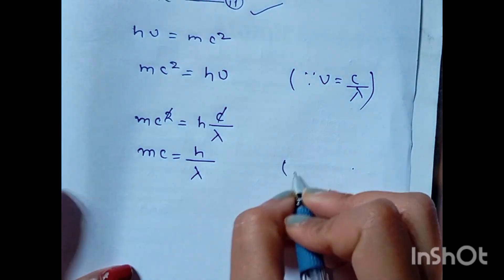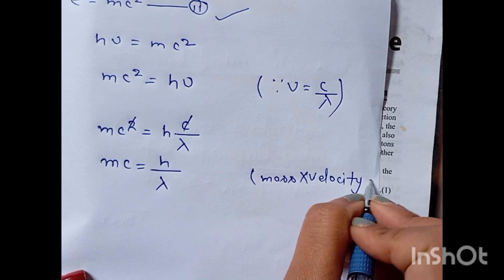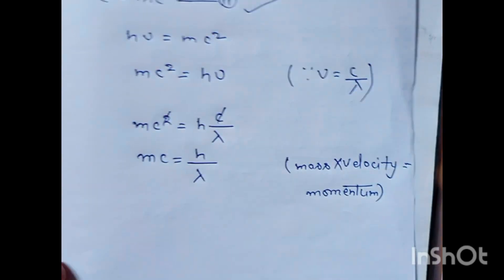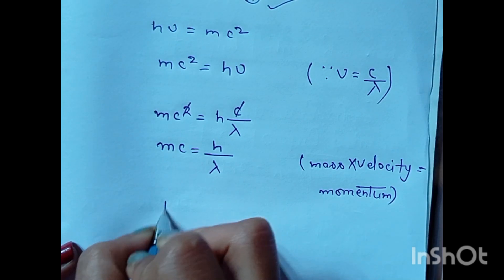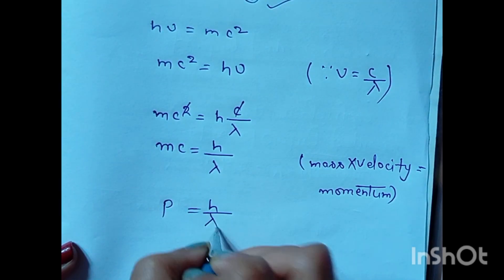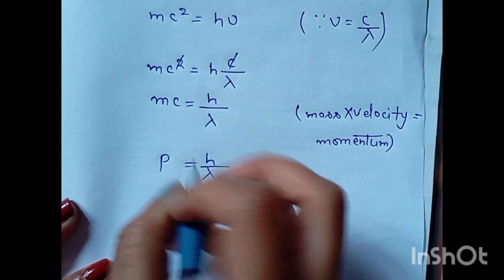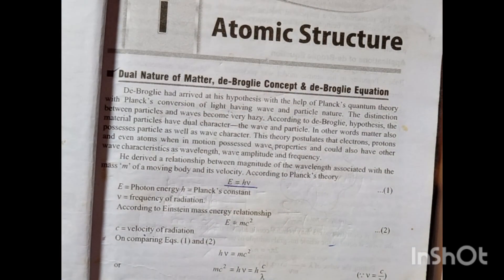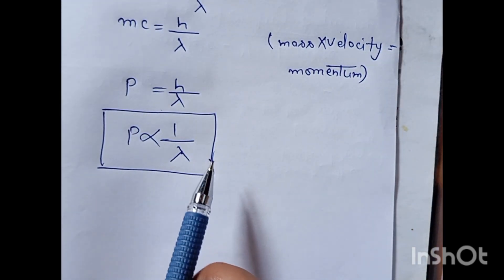Here m is mass and c is velocity. Mass times velocity equals momentum. So mc = p = h/λ. Therefore, momentum p is equal to h/λ, and p is proportional to 1/λ — momentum is inversely proportional to wavelength.